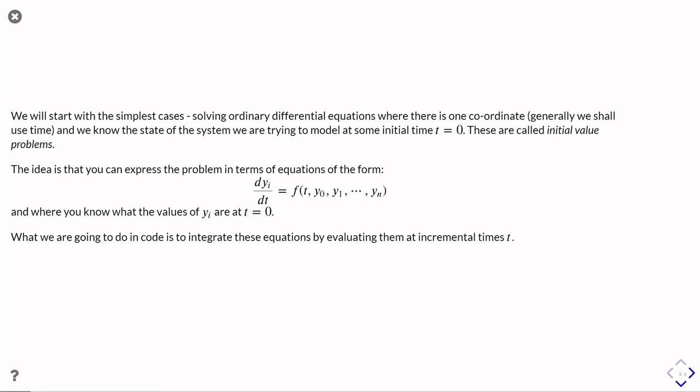We're going to start with a very simple set of cases. We're going to be solving ordinary differential equations where there is one coordinate, which is generally going to be time. We're going to be looking at systems where we know the initial state of the system we're trying to solve. So we know everything about the system at time t equals zero, and what we want to do is find out what's going to happen at some later time. These are a class of problems called initial value problems.